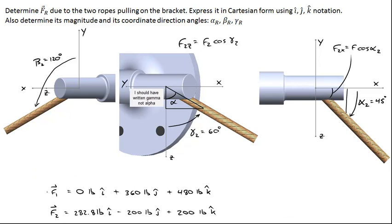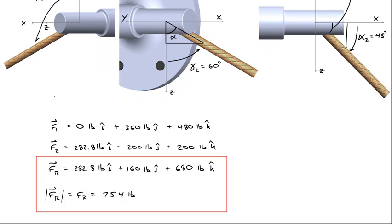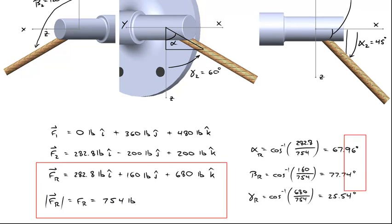So now that I'm done decomposing F1 and F2 into their x, y, and z components, I'll just do the vector sum of these to come up with the resultant force. And that resultant force we see is just the sum of the three components and the magnitude of 754 pounds. To come up with the coordinate direction angles for FR, we use the relationship for alpha R it's just FRx divided by the magnitude, and for beta R it's just FRy divided by the magnitude, and for gamma R it's just FRz divided by the magnitude of the resultant force.